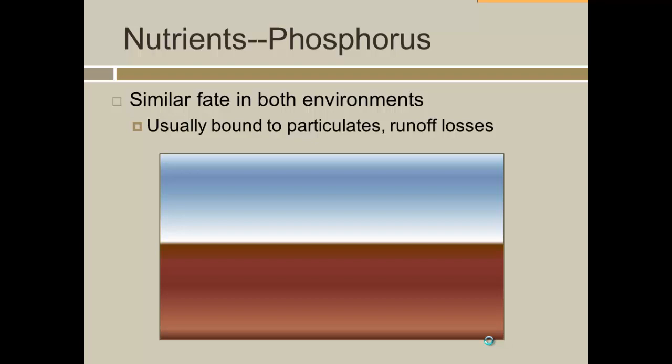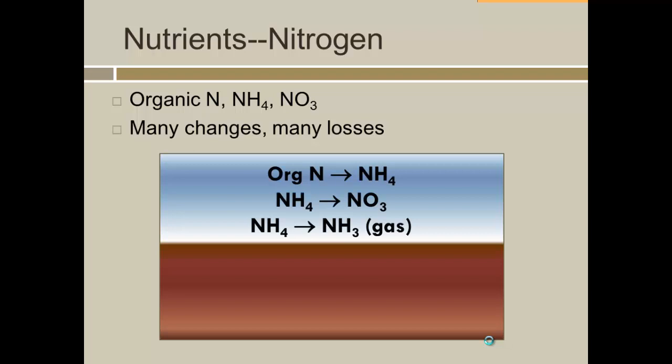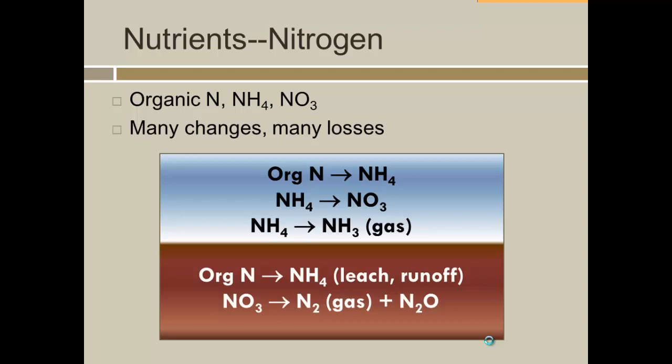What happens to nutrients like phosphorus? Phosphorus is relatively simple — it gets broken down into phosphate, usually becomes bound to particles, and then washes off or leaves as runoff. Luckily there are no volatile forms of phosphorus we have to worry about. Nitrogen is a lot more complicated. In an aerobic environment, you can have organic nitrogen and ammonia eventually forming nitrate, and some of the ammonia can also leave as ammonia gas.